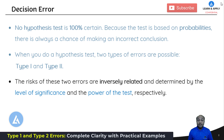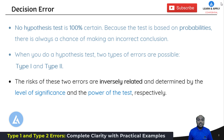The risk of these two errors are inversely related and determined by the level of significance and the power of test respectively. We will learn about level of significance and power of test in the next video. Type 1 error is related to level of significance and type 2 error is related to power of test. As part of this video we are also going to understand how we can control both types of errors.